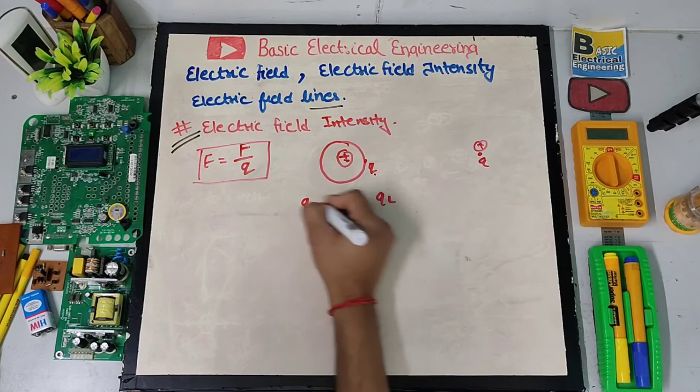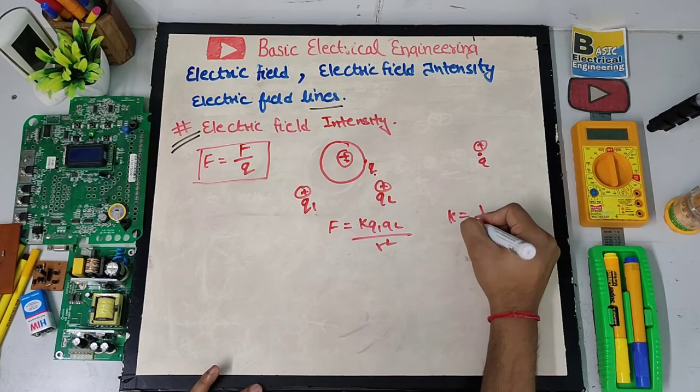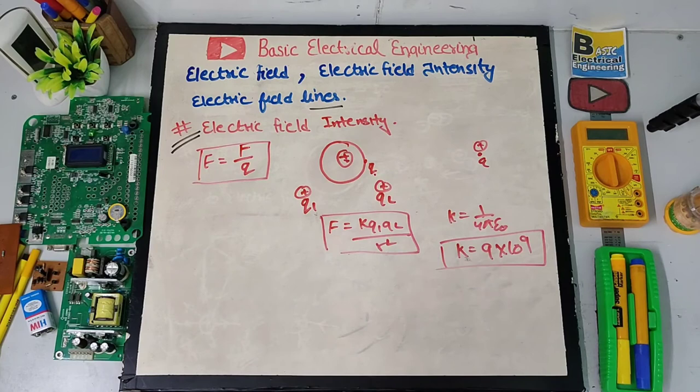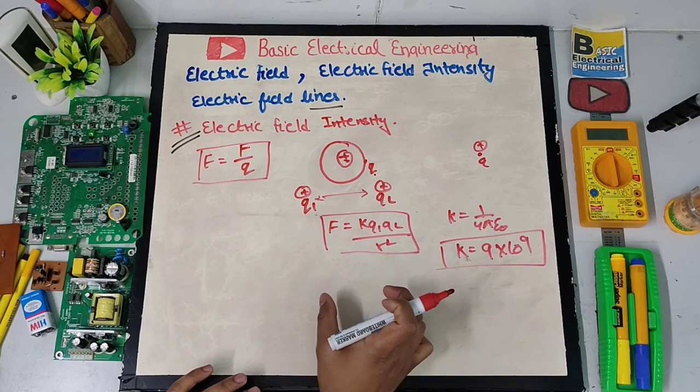Now, how much force do we have? If we have two charges Q1 and Q2, according to Coulomb's law: F equals K times Q1 times Q2 divided by R squared, where K equals 1 upon 4 pi epsilon naught, and its value is 9 into 10 to the power 9. So this is our force for two charges separated by a distance R. Electric field intensity is therefore defined as force acting per unit charge.